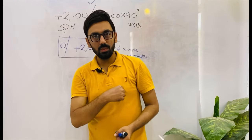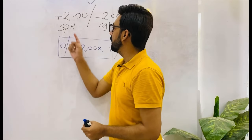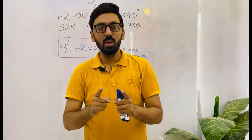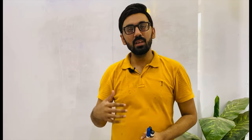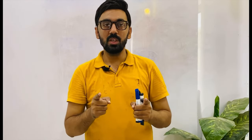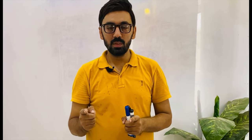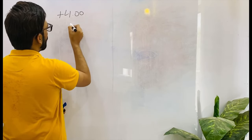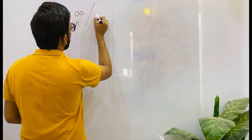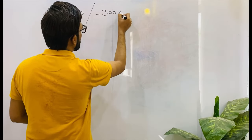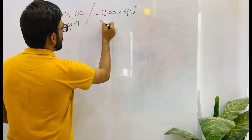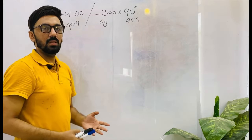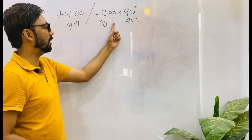The crux of this example is: if you find any prescription in which the power of the sphere and the cylinder are the same but with opposite sign, you have to transpose that prescription. Now let's look at another example where we have to transpose the prescription to analyze the type of astigmatism. For example, if I have plus four spherical with minus two cylinder at 90 degrees. Apparently it looks like mixed astigmatism again — we have one value in plus and the other in minus.